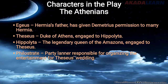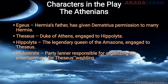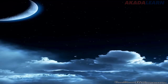The next set of characters are the Athenians. We have Egeus — Egeus is Hermia's father, who has given Demetrius permission to marry Hermia. We have Theseus, the Duke of Athens, engaged to Hippolyta. Hippolyta is the legendary queen of the Amazons, engaged to Theseus. And then we have Philostrate, the party planner responsible for organizing the entertainment for Theseus's wedding.